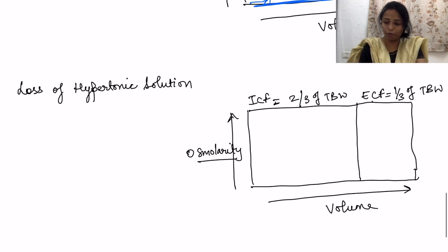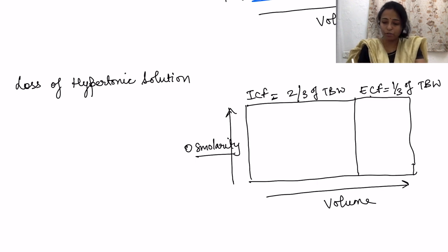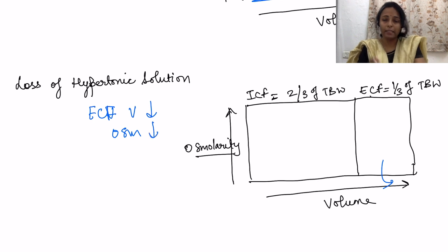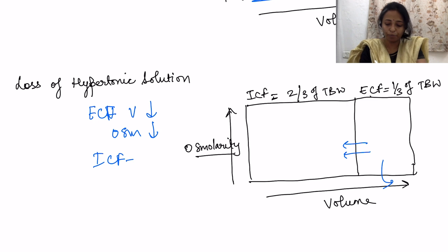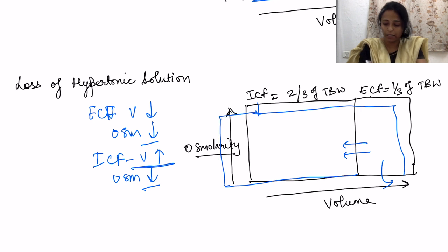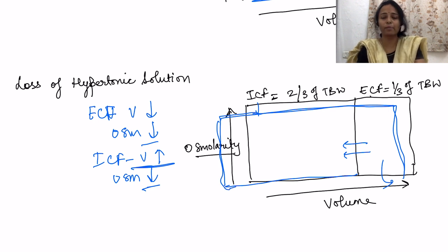Loss of hypertonic solution: it moves out from ECF, so ECF volume decreases. More solutes and less water are being lost, so osmolarity decreases. The decreased ECF osmolarity causes water to move from ECF into ICF, so ICF volume increases. Osmolarity decreases in both compartments as solutes are diluted by water. The end result of loss of hypertonic solution: ECF volume decreases, ICF volume increases, and osmolarity decreases in both compartments.